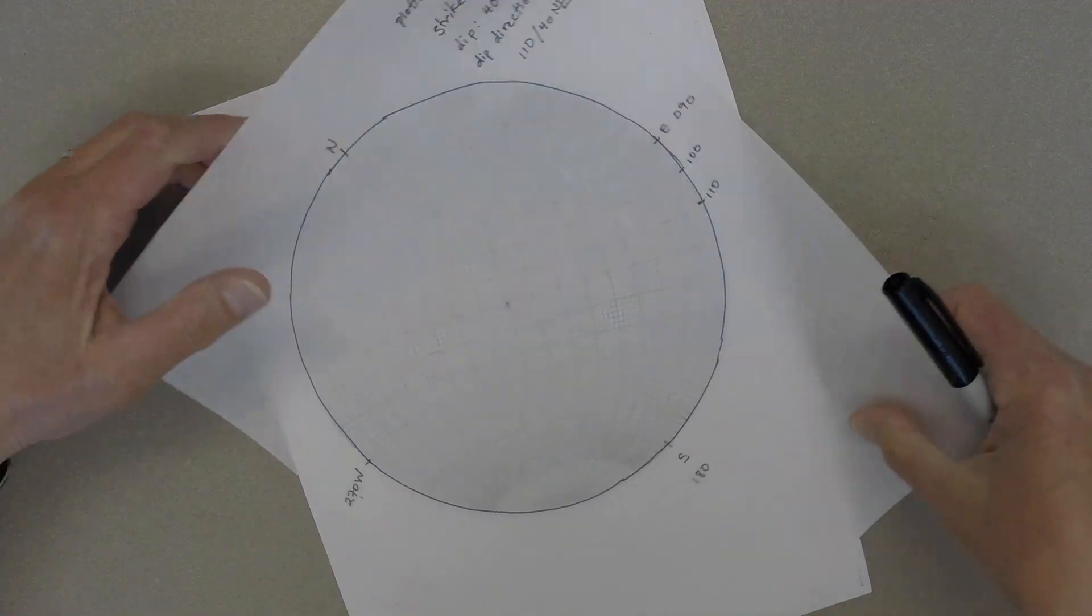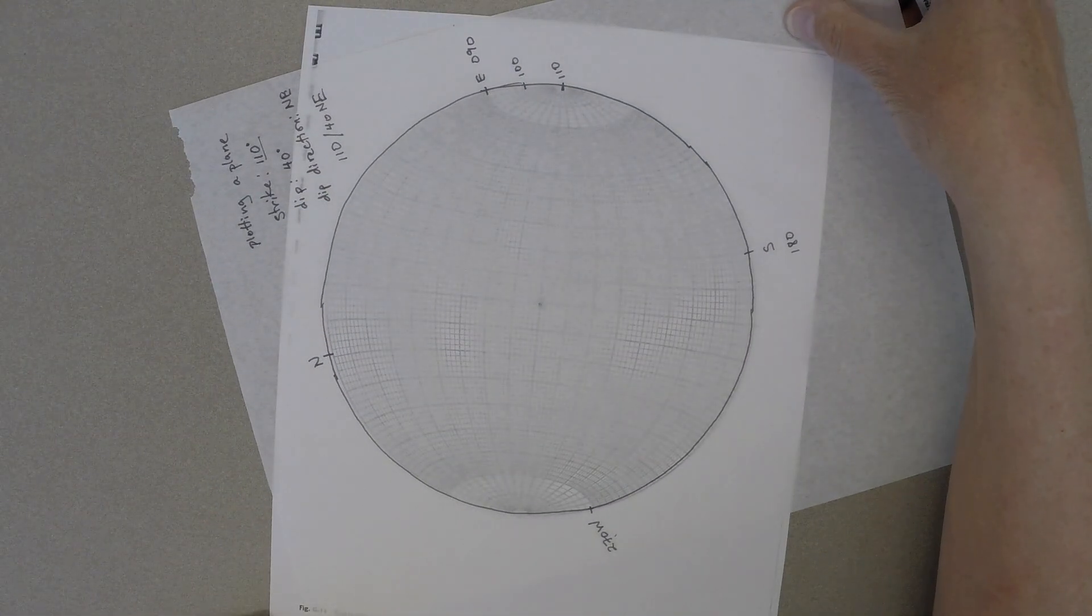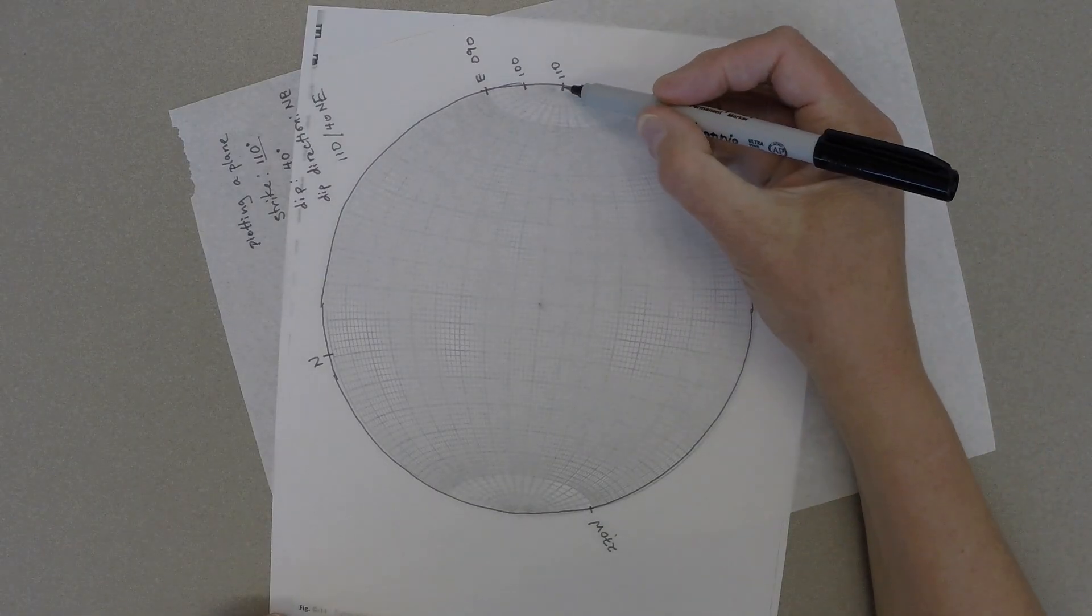Then you spin the overlay on the stereo net so that the strike direction, 110 degrees in this case, is lined up with north.